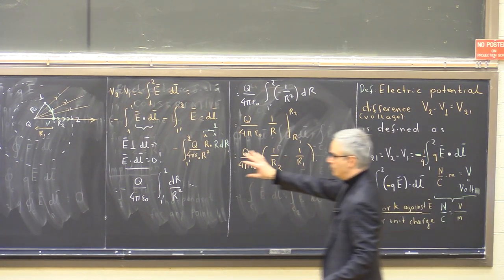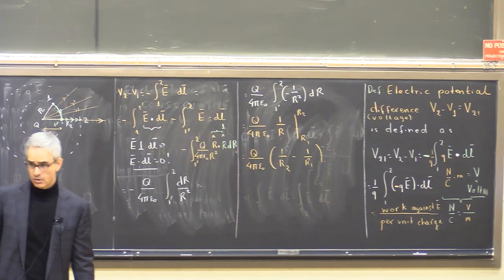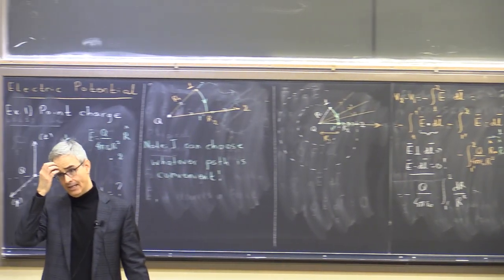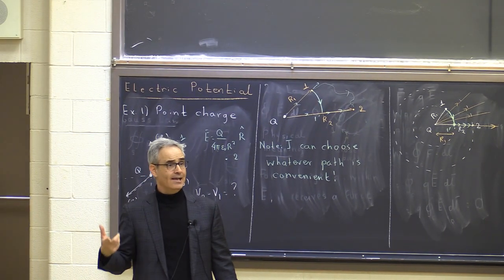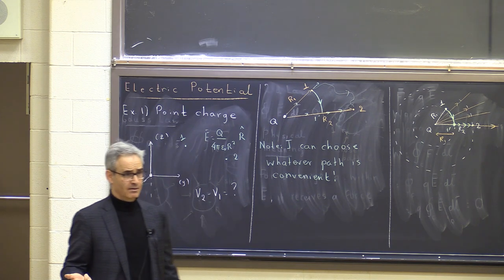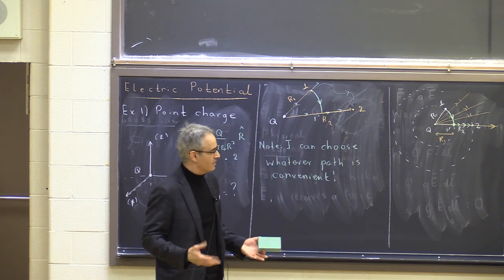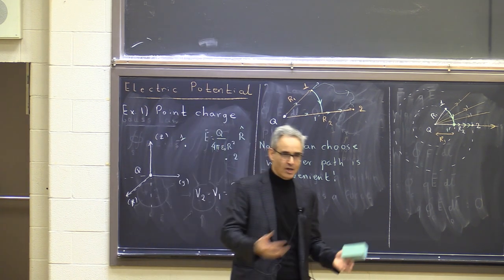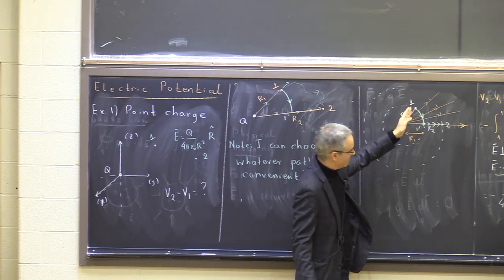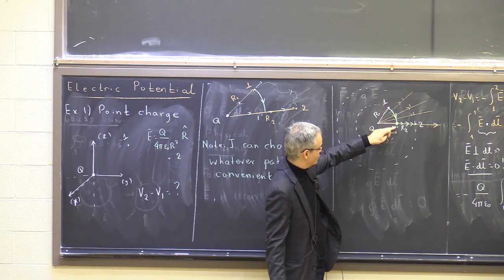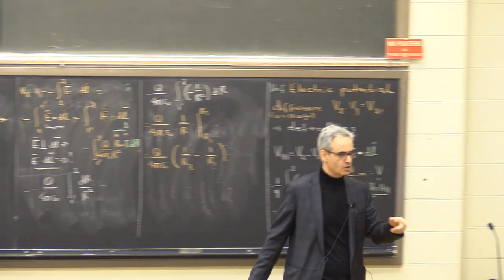The process used here leverages the path independence of the integral. The dot product inside would give trouble unless E and dl are either parallel or perpendicular. Using the freedom to choose the path, I select segments where dl is perpendicular to the electric field — like from 1 to 1 prime — or parallel — like from 1 prime to 2. You can always make that choice.